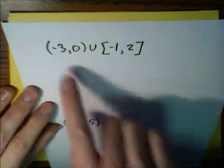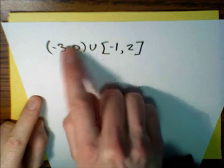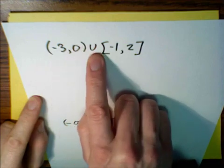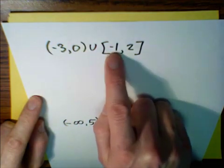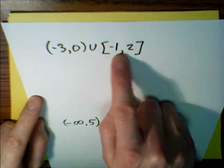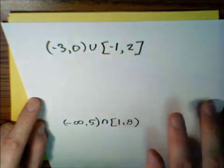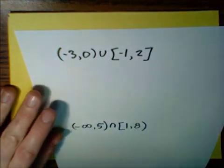Here, we're going to have the interval negative three to zero without including the endpoints, and it's going to be a union of the interval negative one to two, where the endpoints are included.